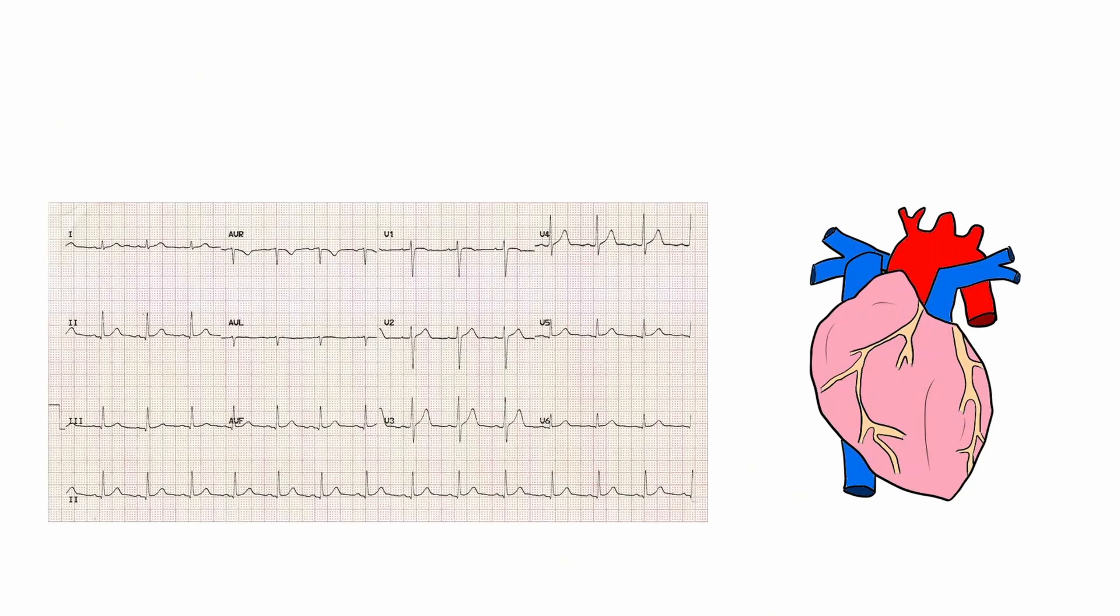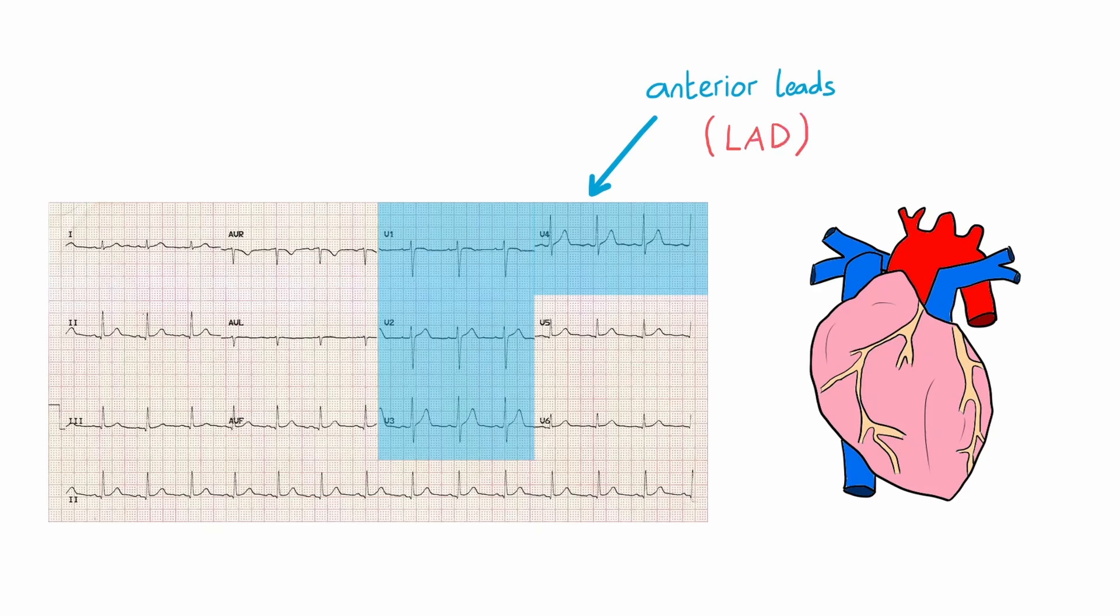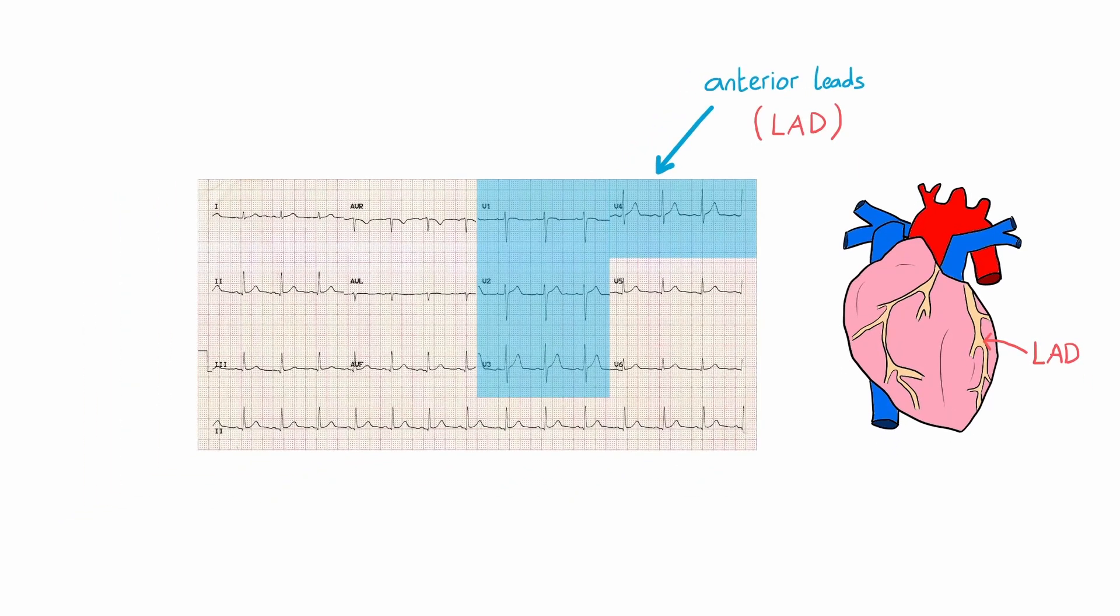Leads V1, 2, 3 and 4 are known as anterior leads. ST elevation in these leads will represent ischemia in the distribution of the left anterior descending coronary artery. We're going to cover this and ST elevation in more detail in the next two videos.